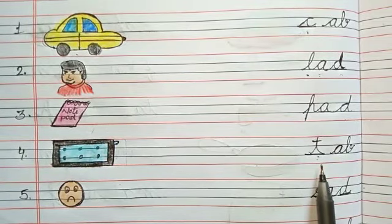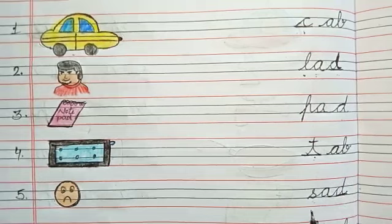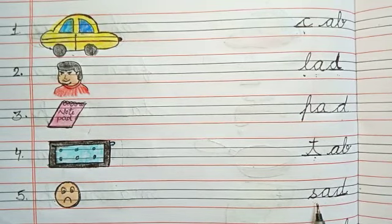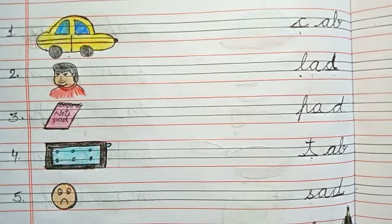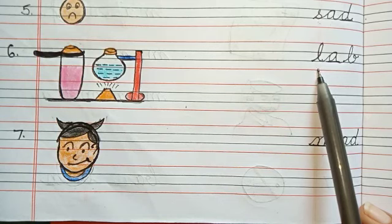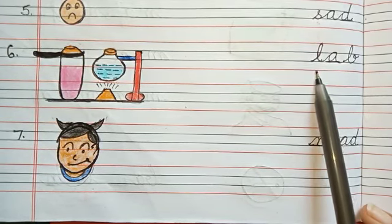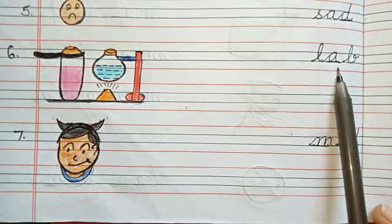Phonic sound of T is ta, ab, tab. Phonic sound of S is sa, sa, sa, ad, sad. Number six. Phonic sound of L is la, la, ab, lab.